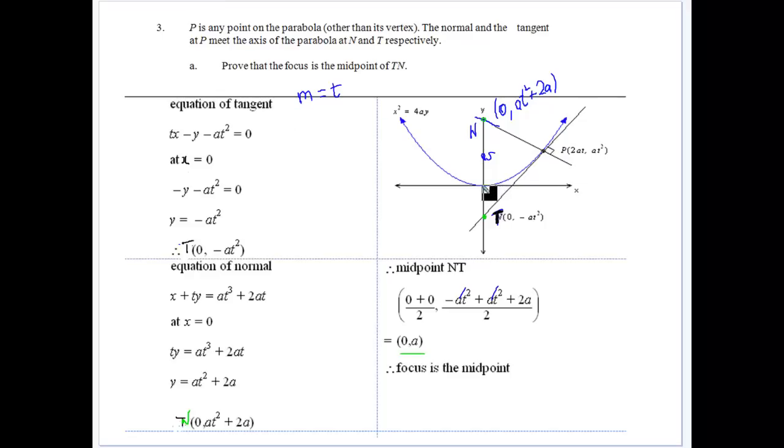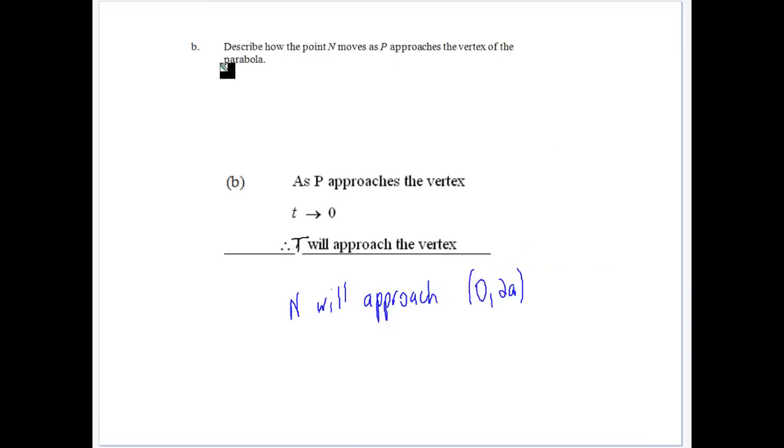So what we've got to look at is, as that happens, at the vertex, we know t is equal to 0. Because the larger the value, the higher the point is. The larger the value, the higher it is up on the parabola. And so the closer it is to 0, the closer we get to the vertex. So as it approaches 0, t approaches 0. So we know T is going to approach the vertex.